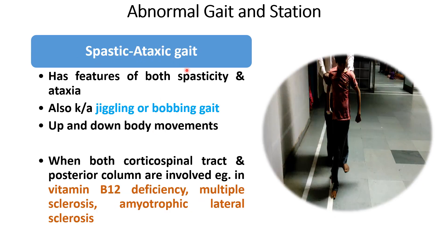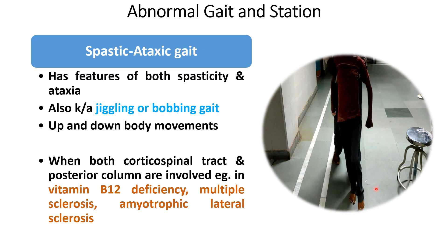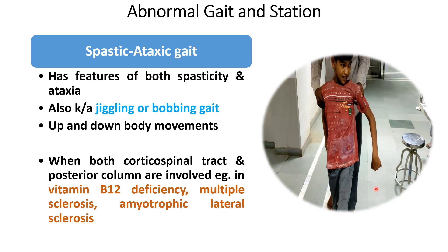Another abnormal gait is the spastic ataxic gait, in which the child has both components of spasticity and ataxia. It is also known as jiggling or bobbing gait. There are up-and-down body movements and tremulous bouncing movements. When both the corticospinal tract and posterior column are involved, this gait is seen in vitamin B12 deficiency, multiple sclerosis, or amyotrophic lateral sclerosis.